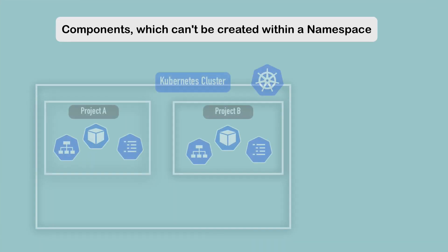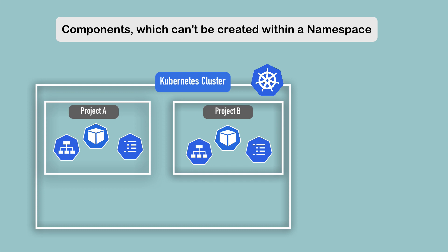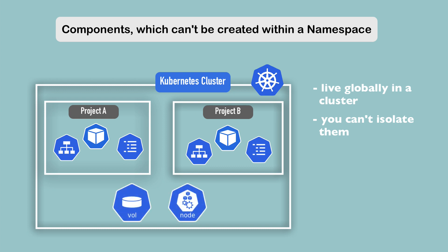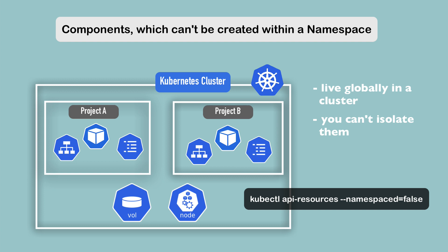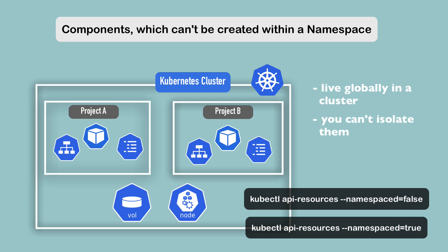Most components can be created within a namespace, but some Kubernetes components are not namespaced — they live globally in the cluster and you can't isolate them in a certain namespace. Examples of such resources are volumes, persistent volumes, and nodes. When you create a volume, it's accessible throughout the whole cluster. You can list non-namespaced components using kubectl api-resources --namespaced=false, and list namespaced resources using --namespaced=true.